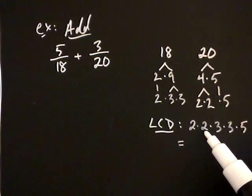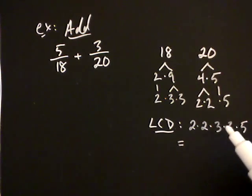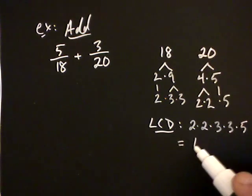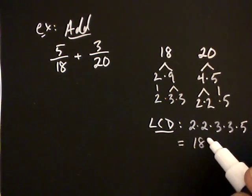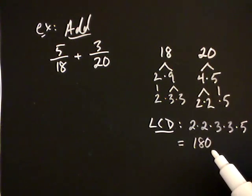Two times two is four, times five is twenty, and then times nine is one hundred and eighty. So that's my LCD — one eighty.